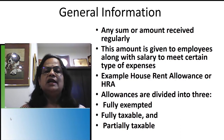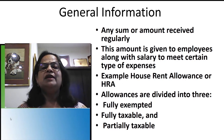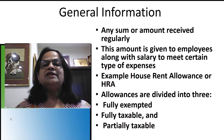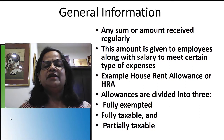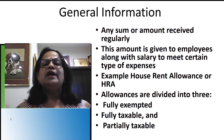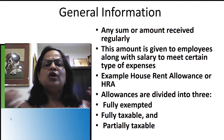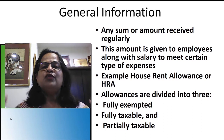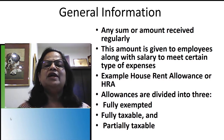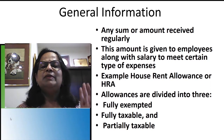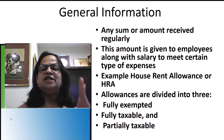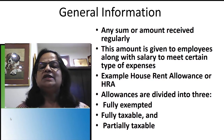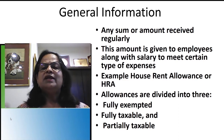Allowances are any sum or amount received regularly. For example, I receive dearness allowance, house rent allowance, and city compensatory allowance because I live and work in Bangalore. If I work in Tumkur, I am not eligible for city compensatory allowance — that is only for people working in cities. The total gross salary is a combination of basic salary, dearness allowance, city compensatory allowance, house rent allowance, and other components.